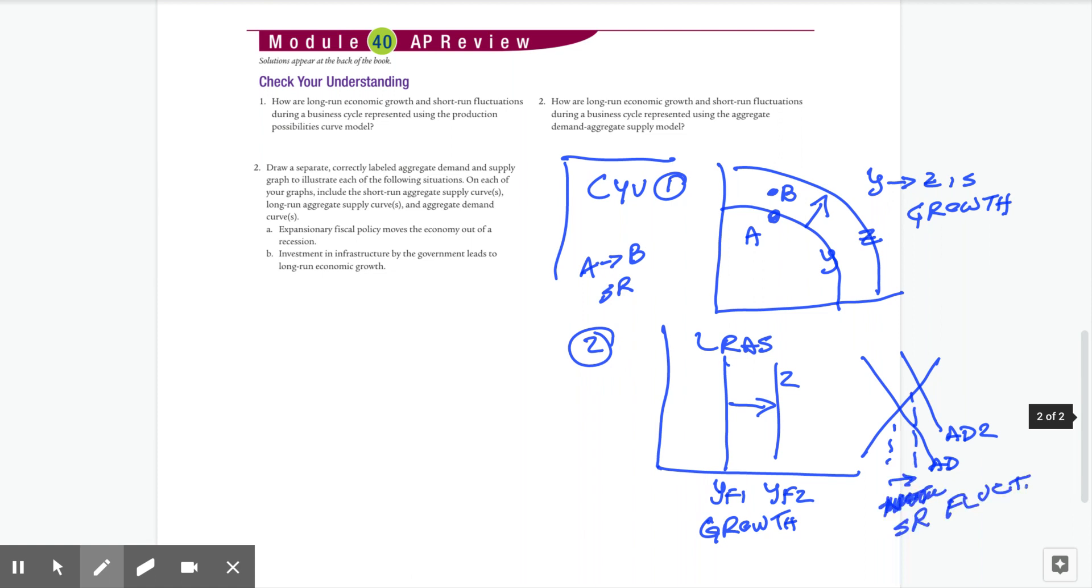Okay, so that's a little bit messier than I probably would have liked. I wish I'd been able to print all this out and work it through with you. But okay, question two on the free response. Let's take a look at free response question. Draw a separate correctly labeled aggregate demand and supply graph to illustrate each of the following situations and show SRAS, LRAS, and AD. And then it says A and B. So I'm going to just draw these here, and we have output and price levels.